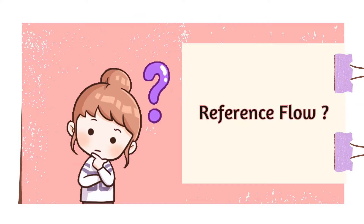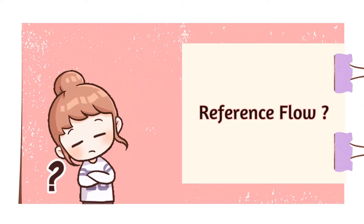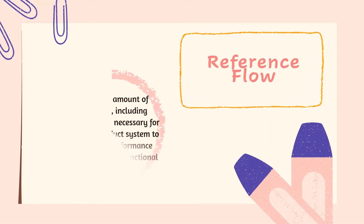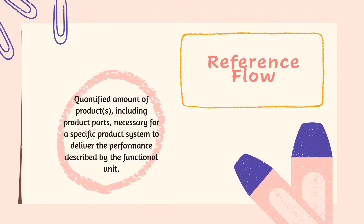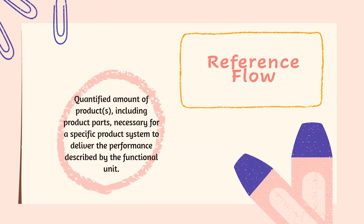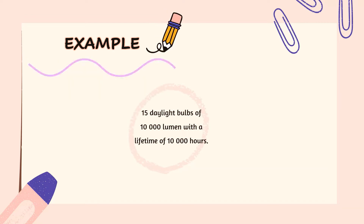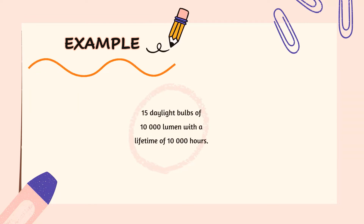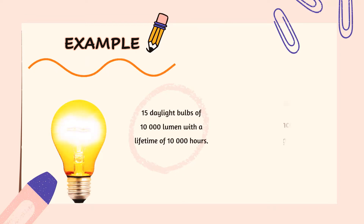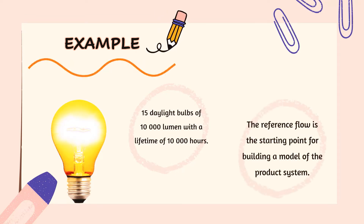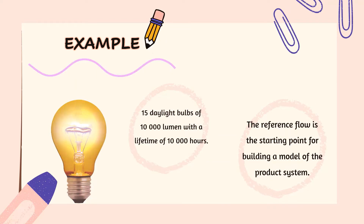How about reference flow? The reference flow is the quantified amount of products, including product parts, necessary for a specific product system to deliver the performance described by the functional unit. For example, 15 daylight bulbs of 10,000 lumen with a lifetime of 10,000 hours. The reference flow is the starting point for building a model of the product system.